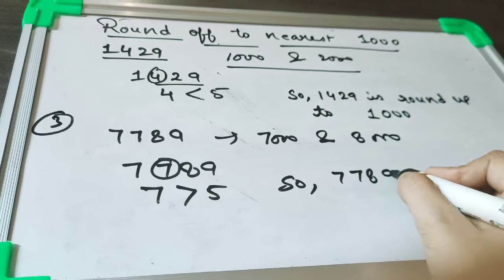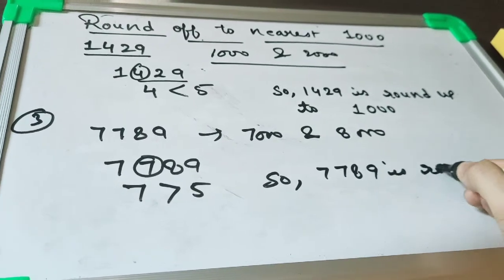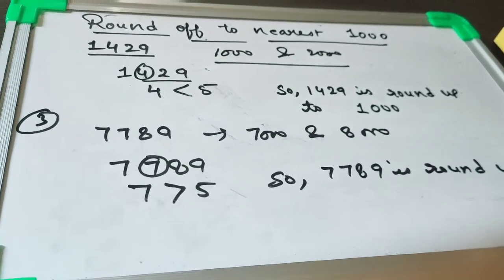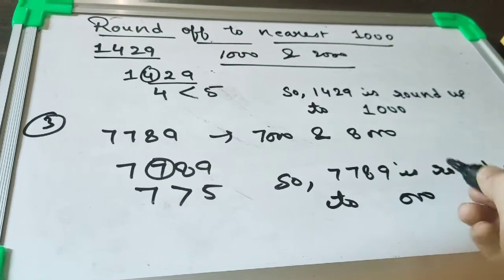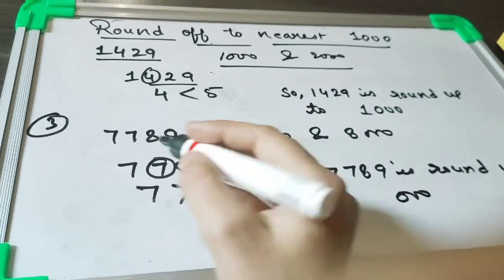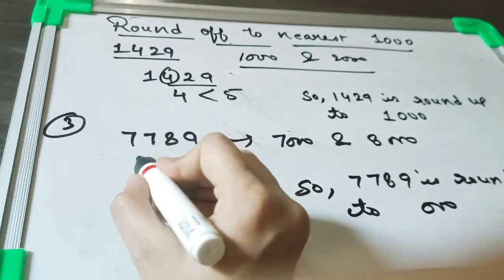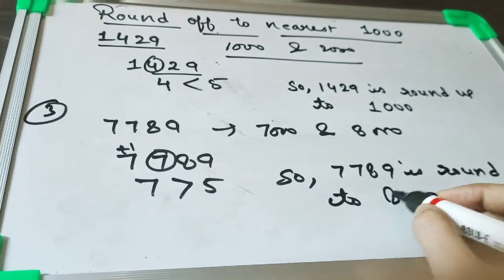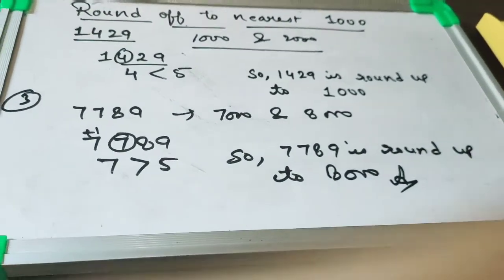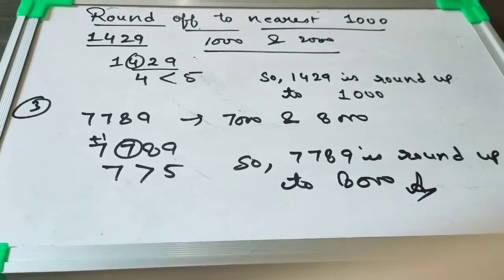So 7789 is rounded up to—there will be three zeros as we are rounding to the nearest thousand, and if it is greater than 5, we have to do what? Plus one. So it will be 8000. I hope it is clear to you. Thank you students, thank you for watching my video.